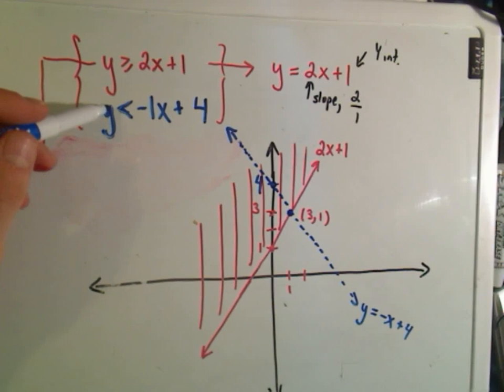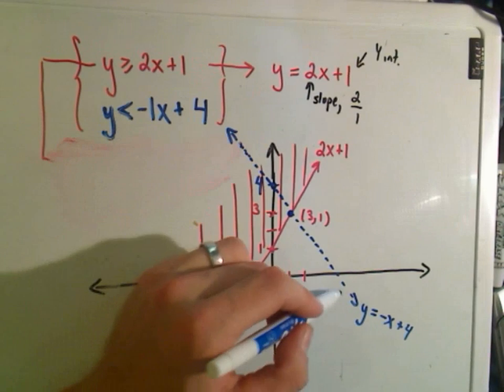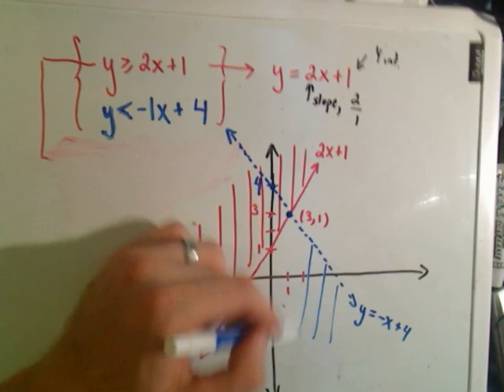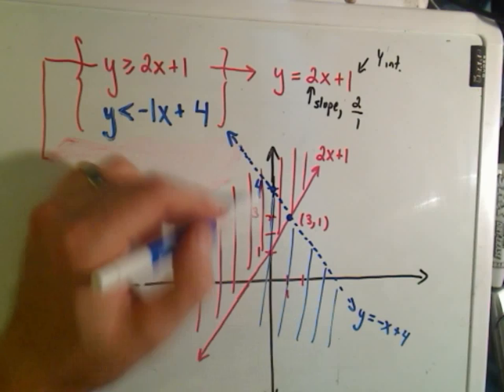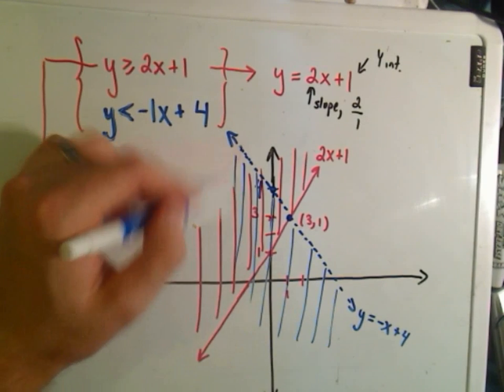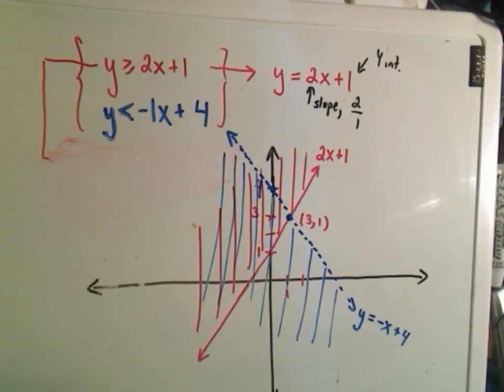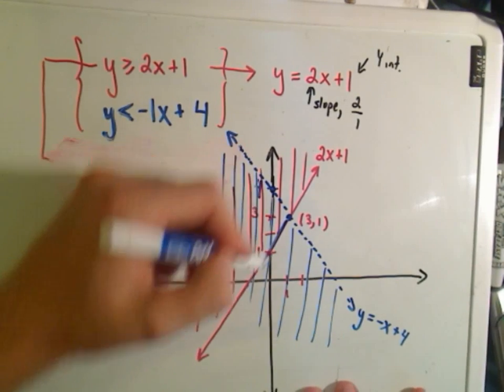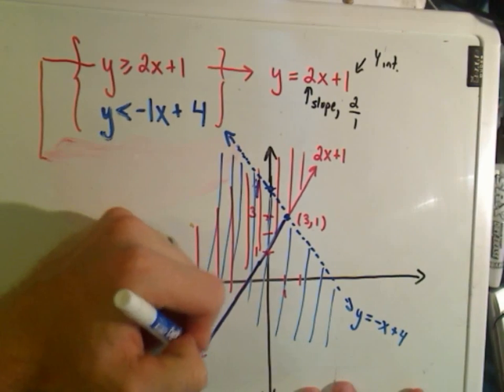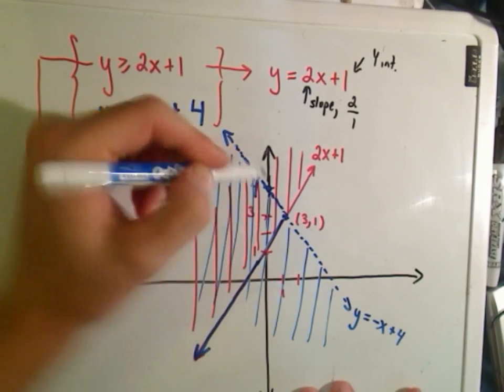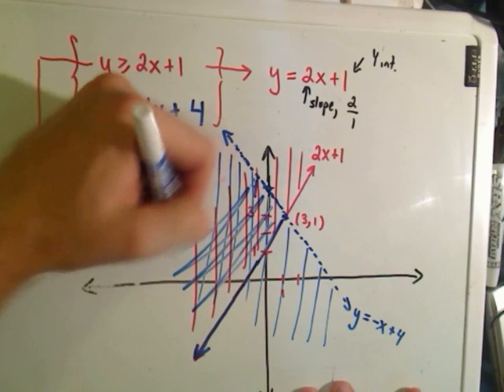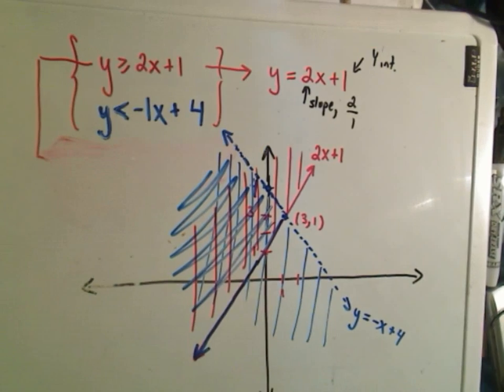And again, if you have the y isolated, if it's y less than, you'll shade below the line. And what you're really looking for is the overlap of these two regions. So the actual system to this inequality is going to be the overlap. And then we have our little dashed line. But it will be this region, this kind of left-hand region.